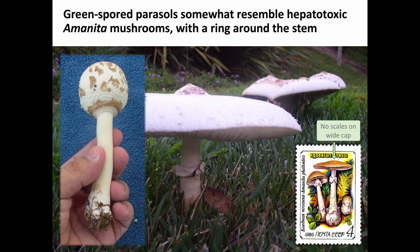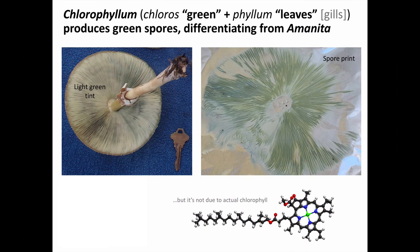The last remnant of the universal veil remains stuck around the stem as the ring or annulus. Another differentiating factor between Chlorophyllum and Amanita is the color of the gills under the cap. Chlorophyllum literally means 'green leaves.' Here on the left we see a light green tint to the gills, which comes from the light green spores produced there. To make a spore print, you remove a mushroom cap from its stem, place it on paper, and leave it overnight — the spores fall from the gills, creating a print that is notably green for this species.